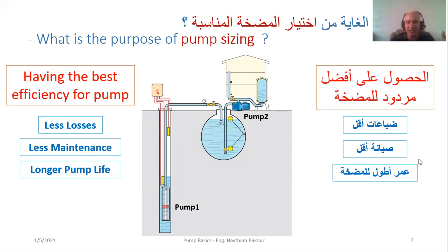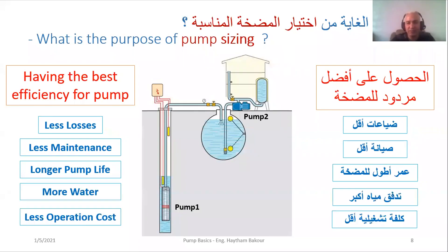A pump can be available for 25 to 30 years. In Syria, we had pumps in irrigation areas in wells working for 20 to even 30 years without maintenance. Within wells, the maintenance procedures are really hard to carry out. When I choose the pump with less efficiency, this pump wouldn't last over 10 years. With good size, I have more water flow and less operational cost — so with good choice: less maintenance, less losses, more water, longer pump life, and less operational cost.